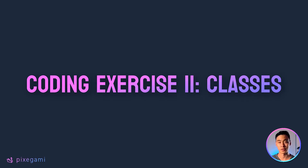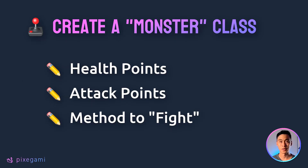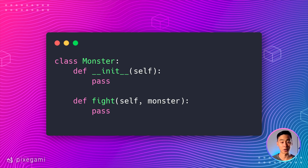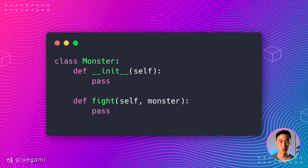Let's wrap up this chapter with a short coding exercise to help you get some practice using classes in Python. Imagine you're making a video game with different monsters that can fight, each with different stats and abilities. I want you to create a monster class in Python that has health points, attack points, and a method to fight another monster. When one monster fights another, the defending monster should lose health equal to the attack points of the attacking monster. There's a code snippet you can use as a starting point. Once you've filled out the class and methods, create a couple of instances and get them to fight each other to test it. Pause the video now and give this exercise a shot, then resume to see my solution.